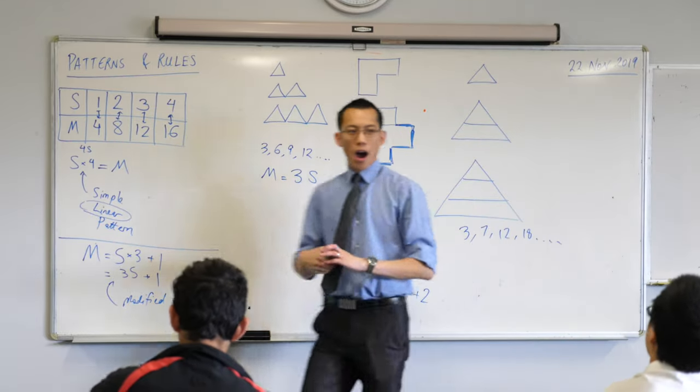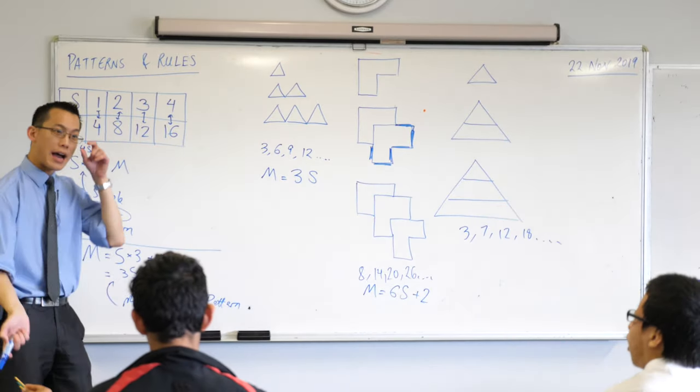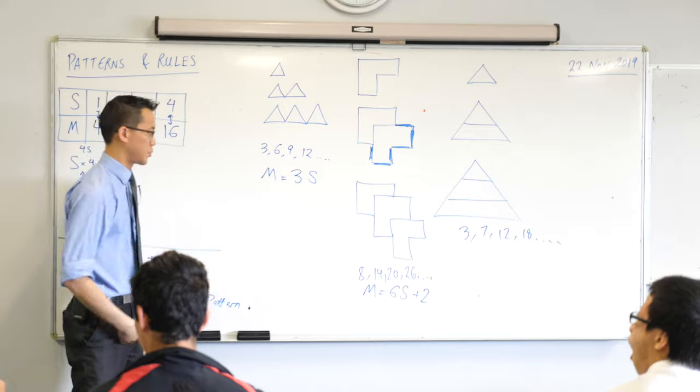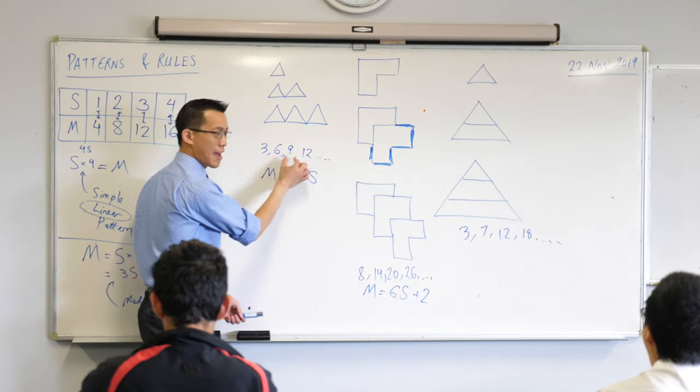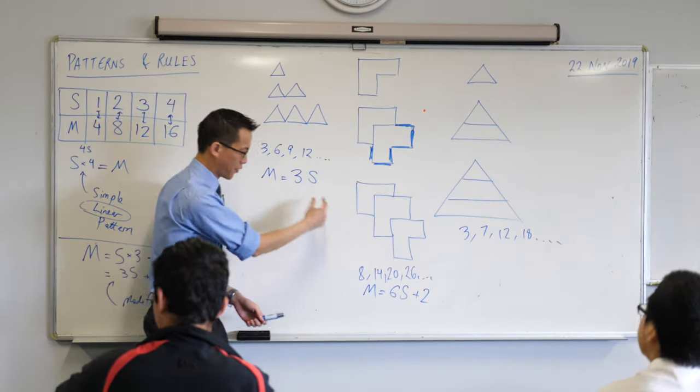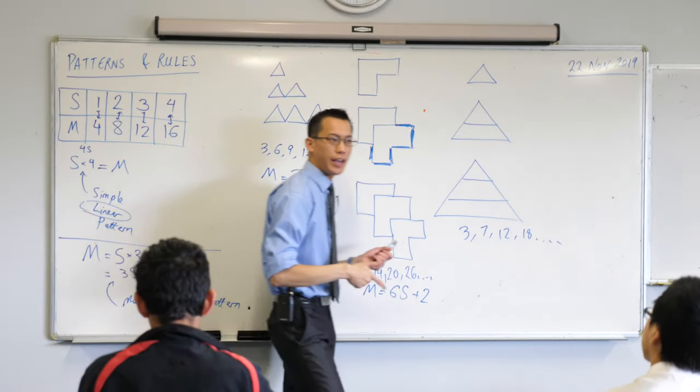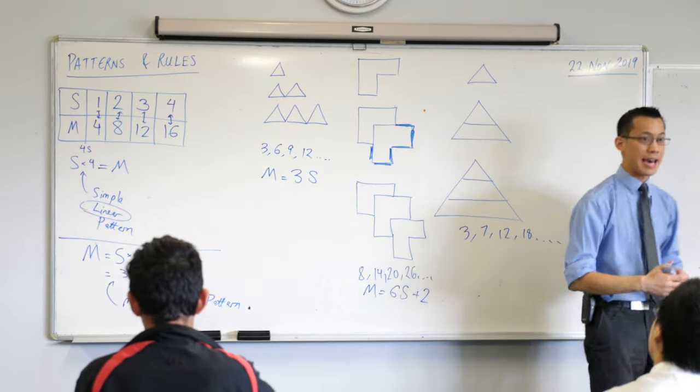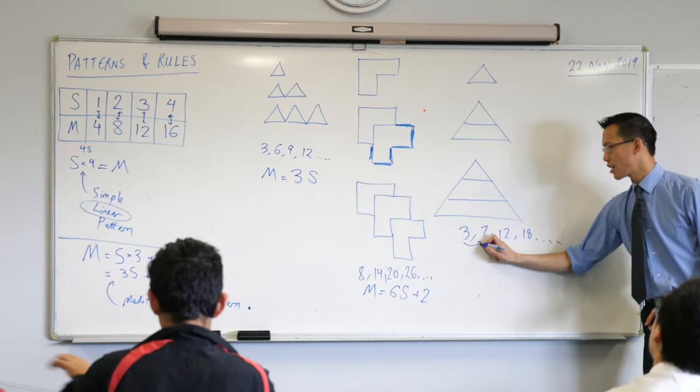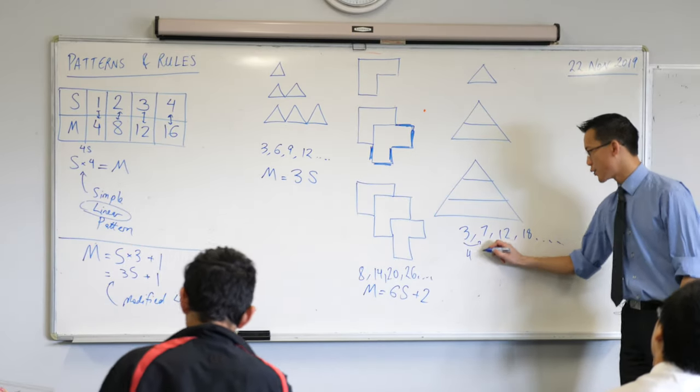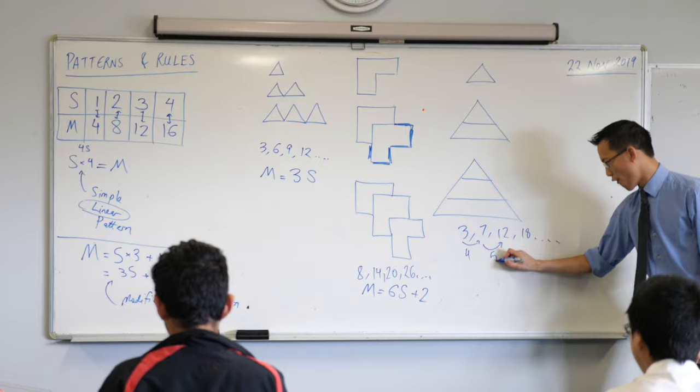Now, the issue here, and the reason why I didn't have you create the rule for this one is, unlike with these, right, where you've got a common difference every time, three or six, the difference here keeps changing. What's the difference between shape one and shape two? It's four. The difference between shape two and shape three? Five.